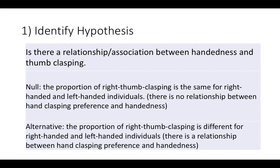The next thing we do is form our hypothesis. There are two hypotheses that we state. The first one is called our null hypothesis. This is actually a hypothesis that our statistical method will allow us to reject. The null hypothesis states that there is no relationship between those two factors — there is no relationship between hand clasping preference and handedness, so our statistics should fail to show a relationship.